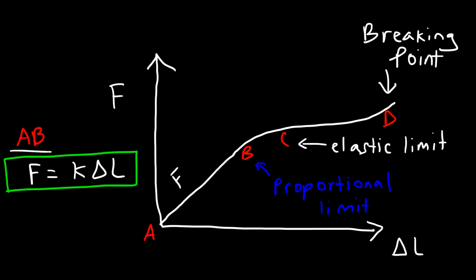Between points A and C, we have something known as the elastic region. The elastic region is the region where, if you remove the external force, the object will return to its natural length — it won't be deformed, it's going to regain its original shape. Now once you pass point C, the elastic limit, you enter a different region known as the plastic region. If you stretch it too far, it will lose its elasticity and won't be able to snap back to its original shape, and you could permanently deform the solid.